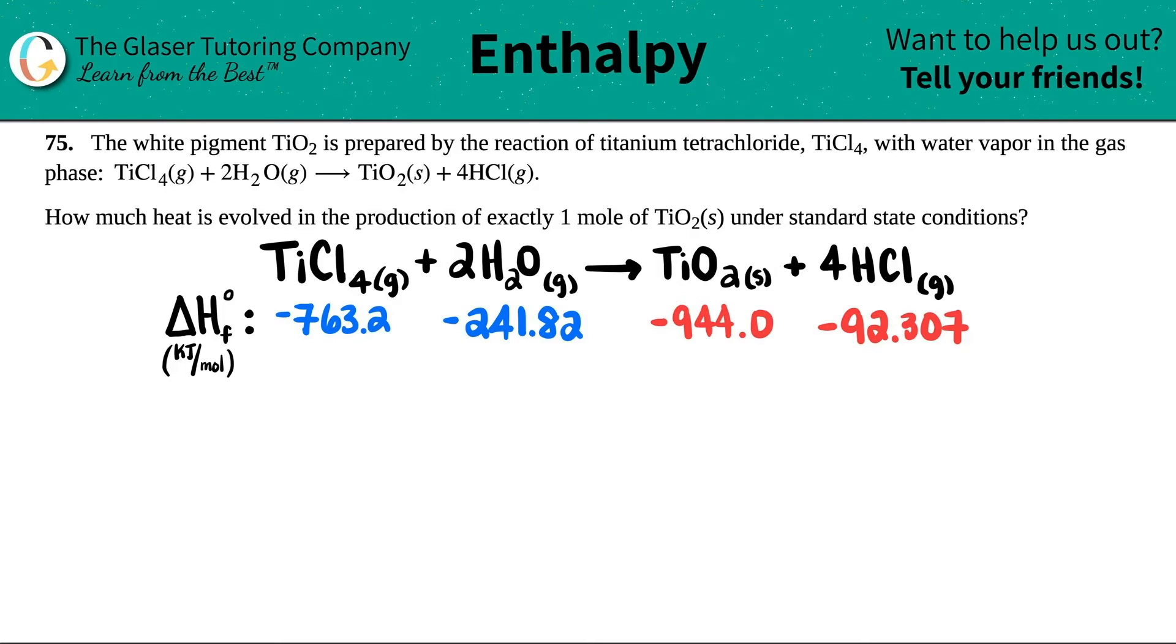Number 75. The white pigment TiO2 is prepared by the reaction of titanium tetrachloride, which is TiCl4, with water vapor in the gas phase. And they give the reaction, which I rewrote for you here. So I have TiCl4 gas plus 2H2O gas yields TiO2 solid plus 4HCl gas.